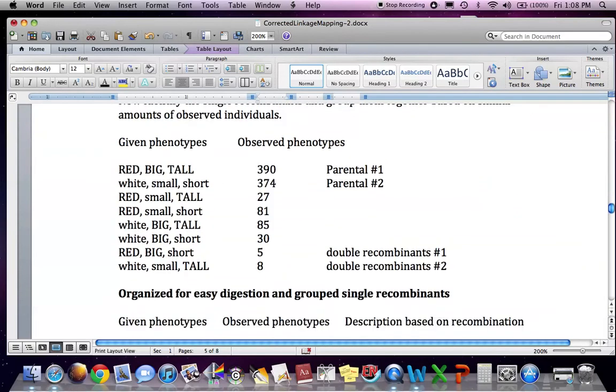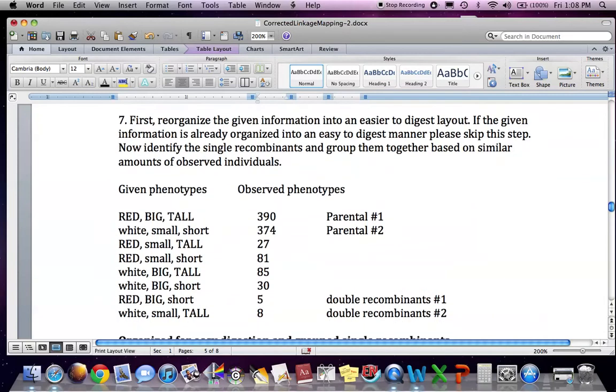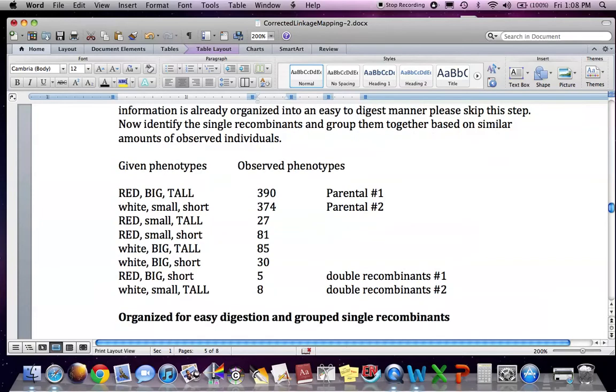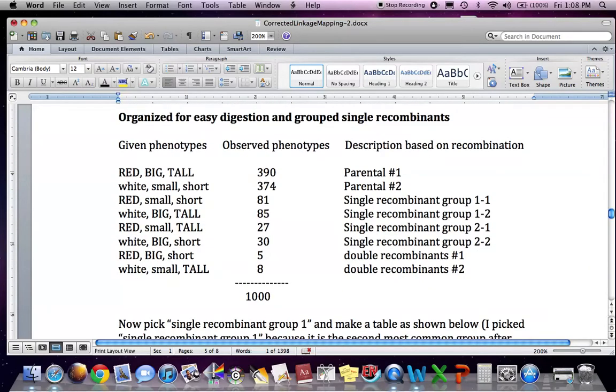Once you know that, then you could reorganize the given information in an easier to digest layout. If the given information is already organized in an easy to digest manner, please skip this step. Now you identify the single recombinants and group them together based on similar amounts of observed individuals. So here and here, kind of one group, and then this is another group. So then you just reorganize it like that.